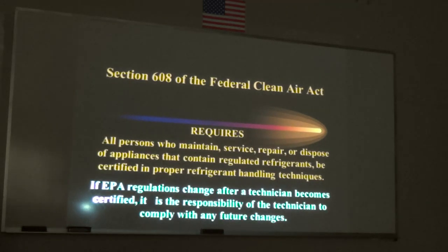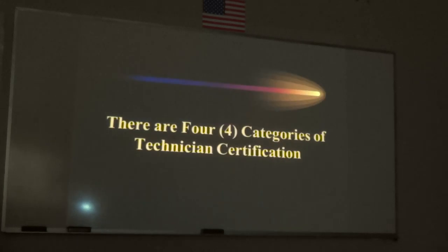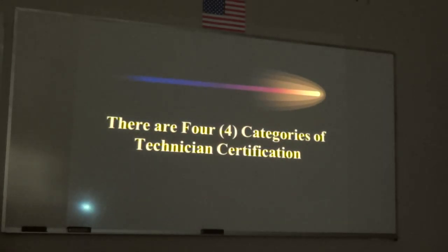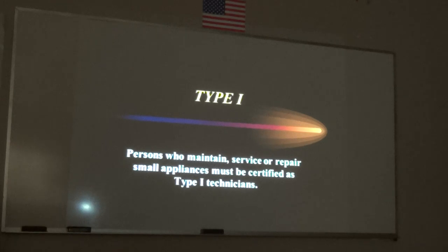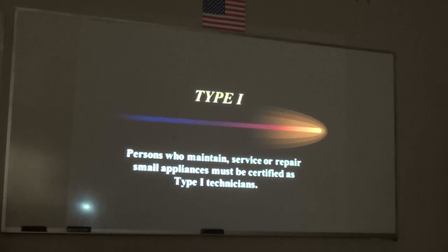You're taking the EPA exam — Section 608 of the Federal Clean Air Act — for stationary equipment. It does not include motor vehicles; those are covered under Section 609. There are four categories for technical certification: type one, type two, type three, and core. You're going to take all four tests, 25 questions each. You have to pass each section — no more than seven wrong in any one section.